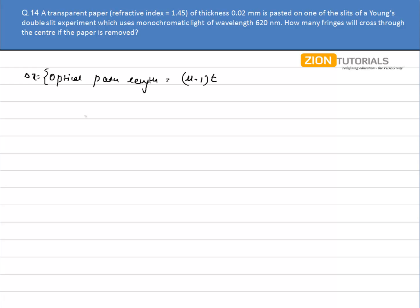I need to calculate how many fringes will cross. If this path difference is an integral multiple of lambda, it will tell me how many fringes will cross if the slab is removed.